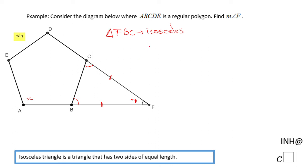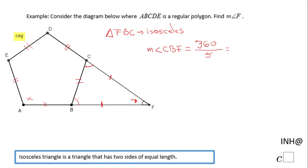So how can we find any of these angles? The sum of the exterior angles of a polygon is 360°, so we can use that property. Therefore, one exterior angle — let's say angle CBF — will be 360 divided by the number of sides. This polygon has five sides, so we divide by five, giving us 72 degrees.